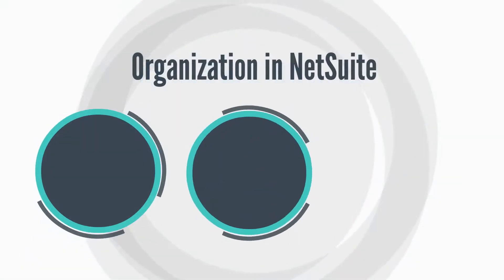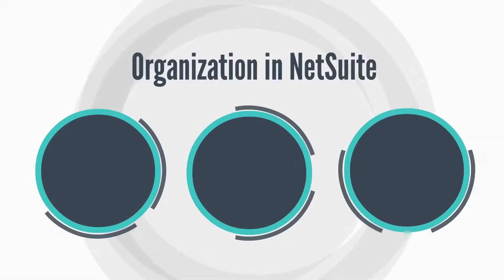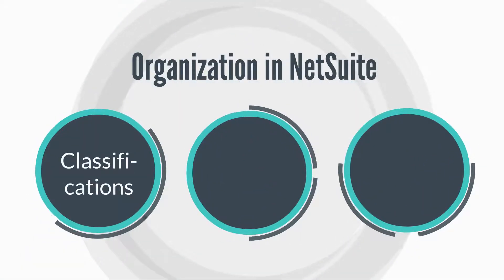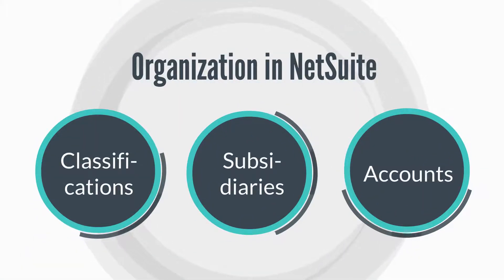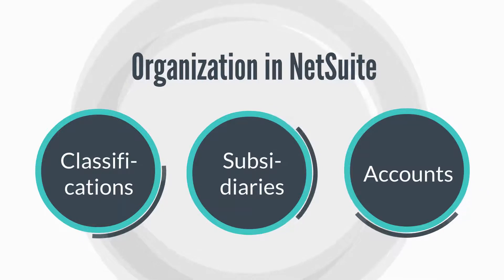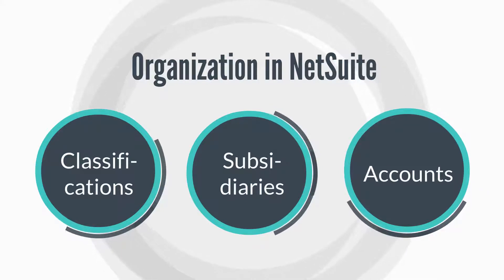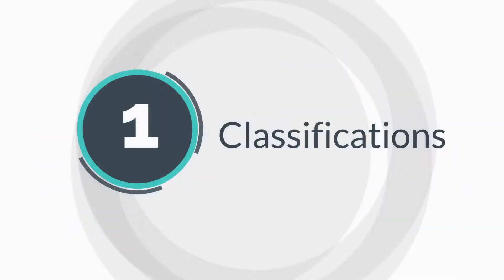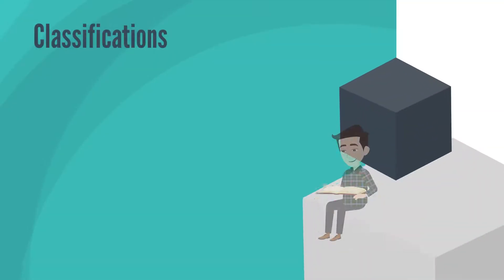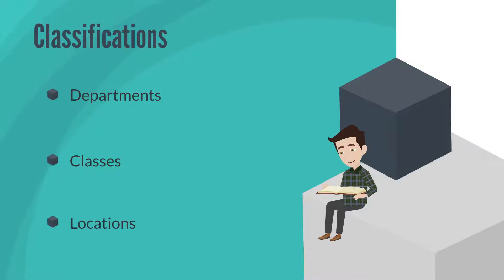Let's talk about three key means of organization in NetSuite: classifications, subsidiaries, and accounts. The important thing to note as we look at these is how they are different from each other as well as how they each interact with one another. Let's start by looking at classifications. There are three classifications: departments, classes, and locations.